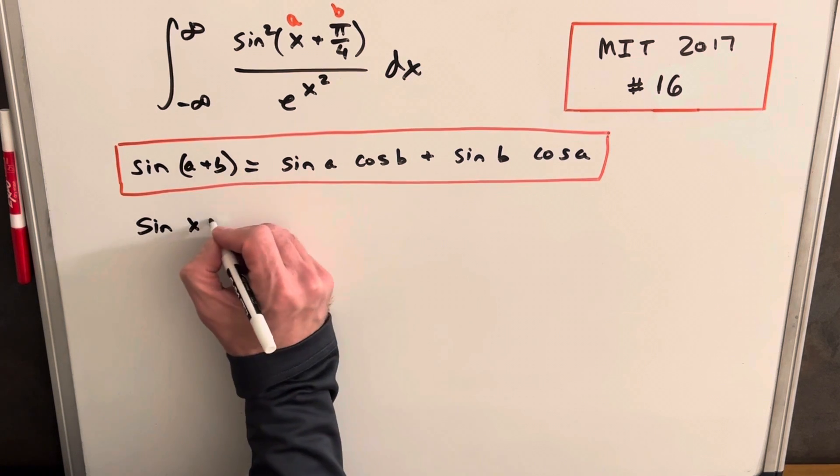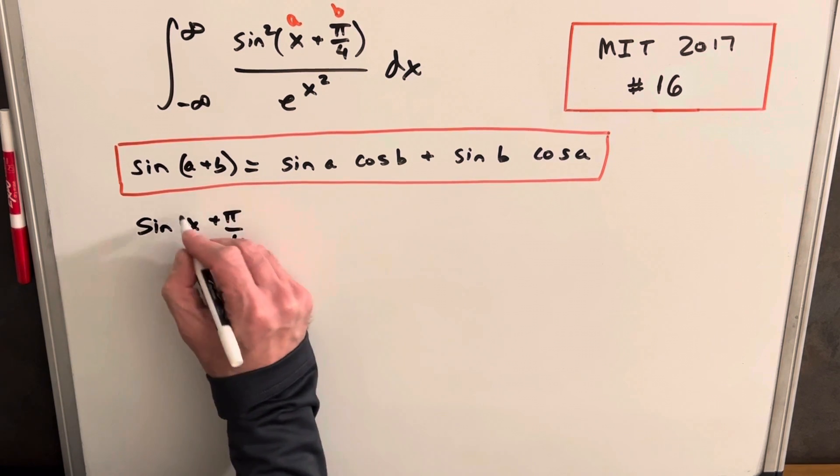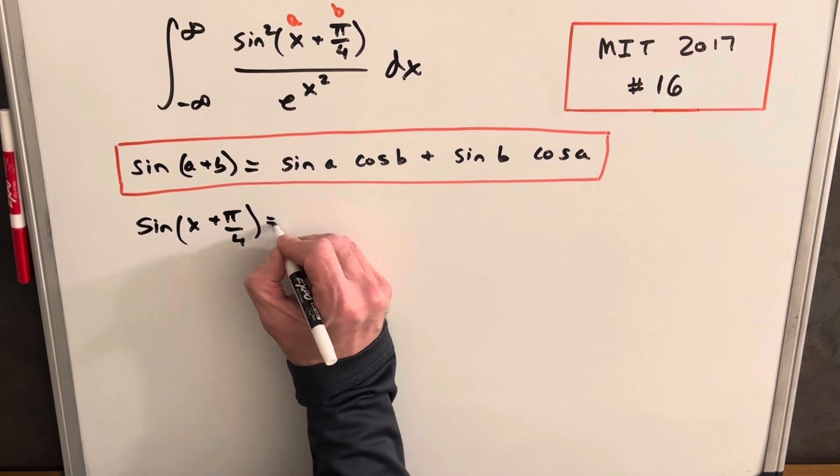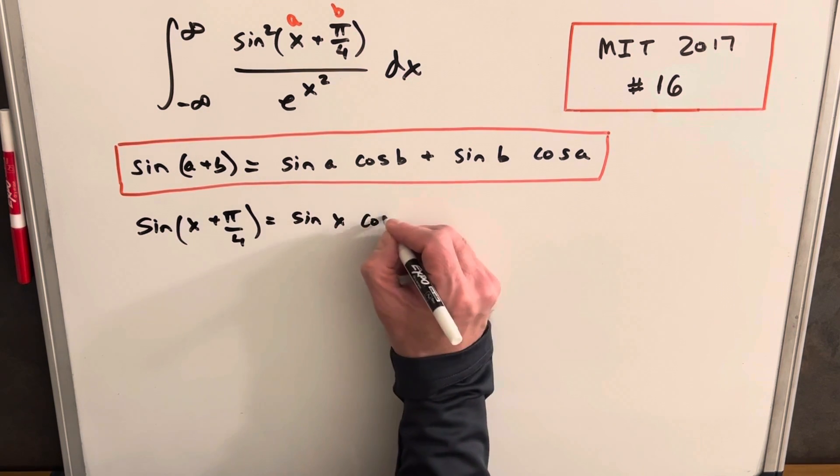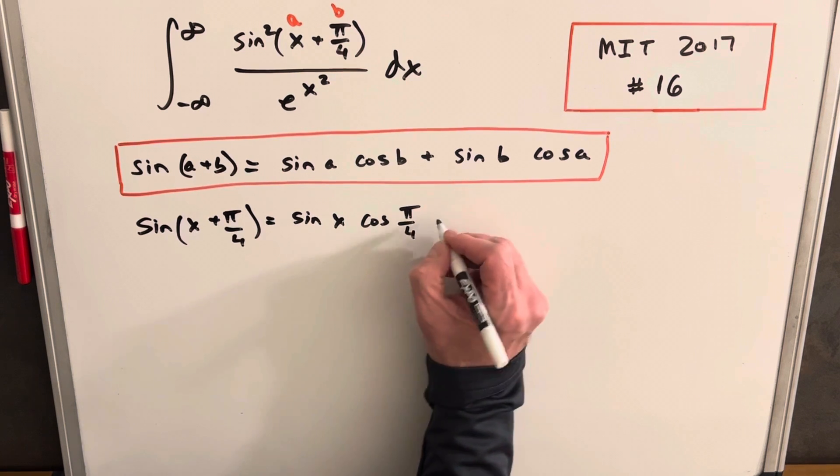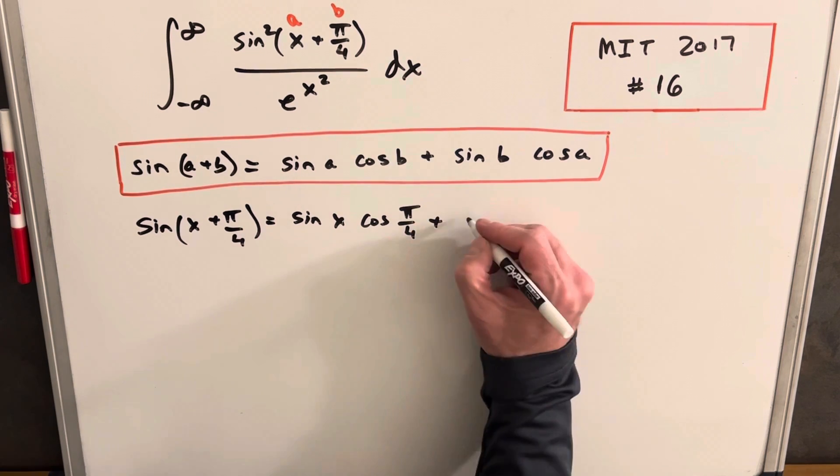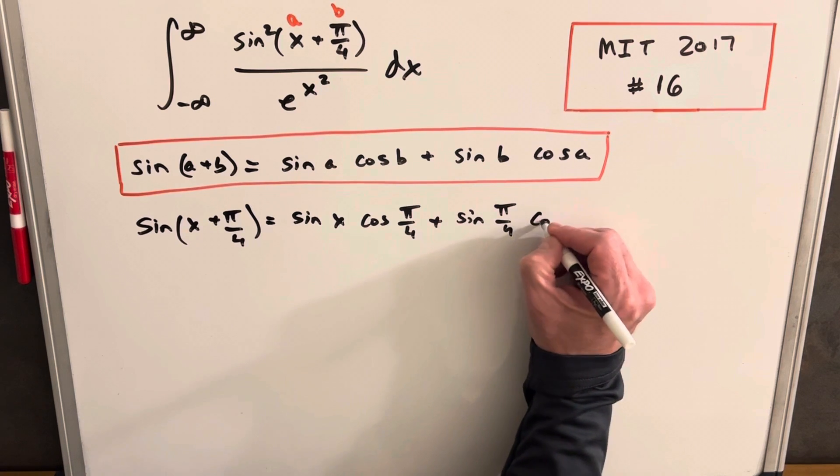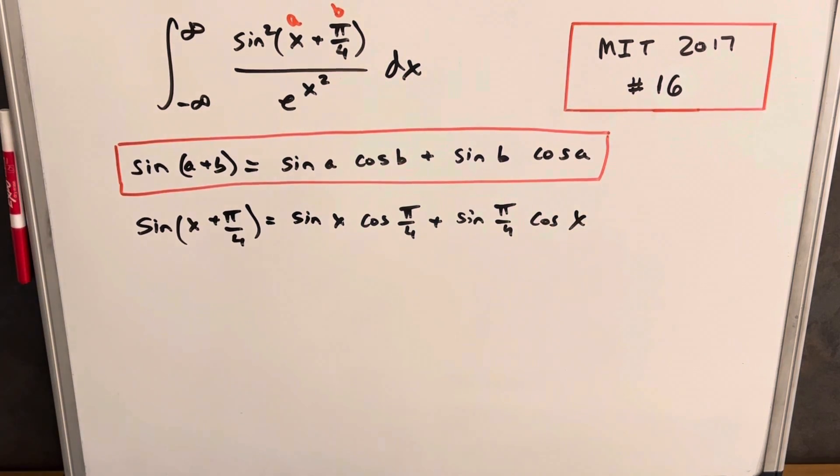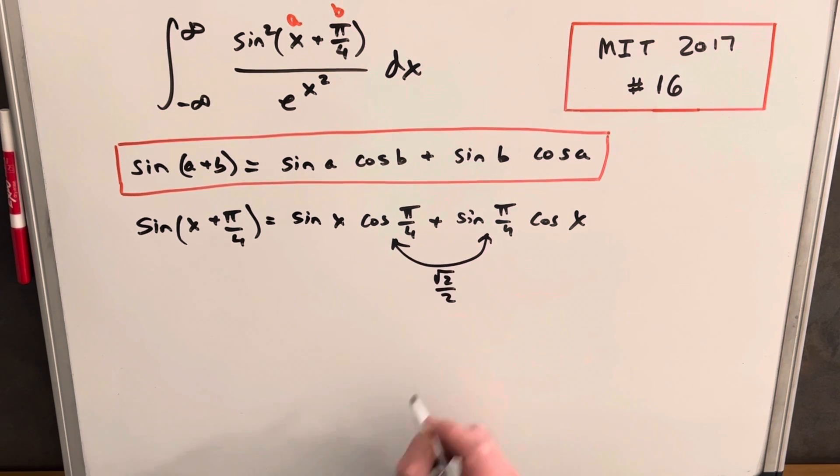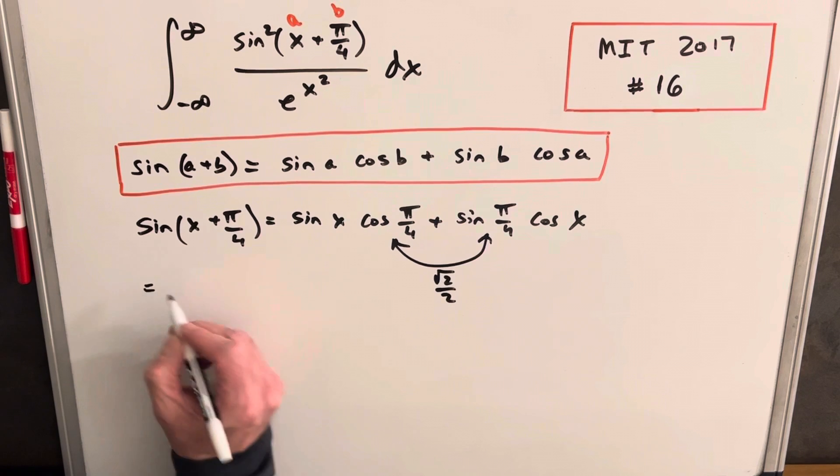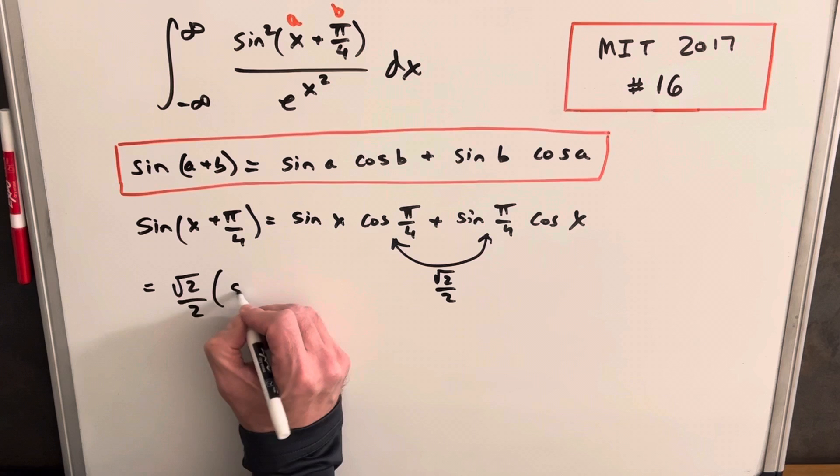So doing this, we'll just follow our form here. For sine of x plus pi over 4, we'll have sine x cosine of our b which is pi over 4, then sine of pi over 4 cosine x. And this is going to work out nice because each of these values here is just square root of 2 over 2. So we can actually write this whole thing as: we'll pull the full factor out, square root of 2 over 2, and